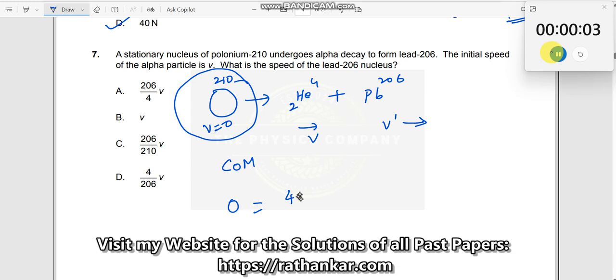What is the mass of this nuclei? Four. So four times v plus what is the mass of this one? 206 times v dash. So v dash will now be equal to four divided by 206 into v, right?